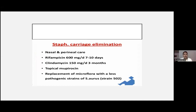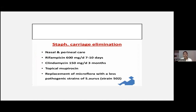Staph carriage elimination through nasal and perineal care is key. Another drug is rifampicin 600 mg daily for 7 to 10 days. Clindamycin 150 mg per day for 3 months has also been used. Topical mupirocin is also available. In our government hospitals we currently have government supply of topical mupirocin only.